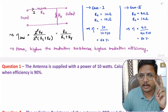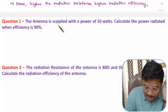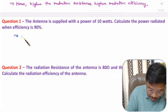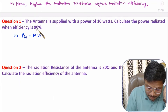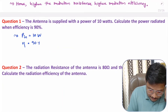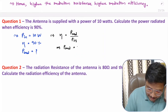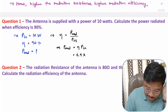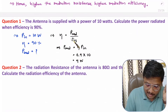Now let us solve two interesting problems based on antenna radiation efficiency. In the first question, the antenna is supplied with input power of 10 W and efficiency is 90%. We need to find radiated power. Using the basic equation: radiated power = η × P_in = 0.9 × 10 = 9 W. That is how simply we can identify radiated power when this data is given.